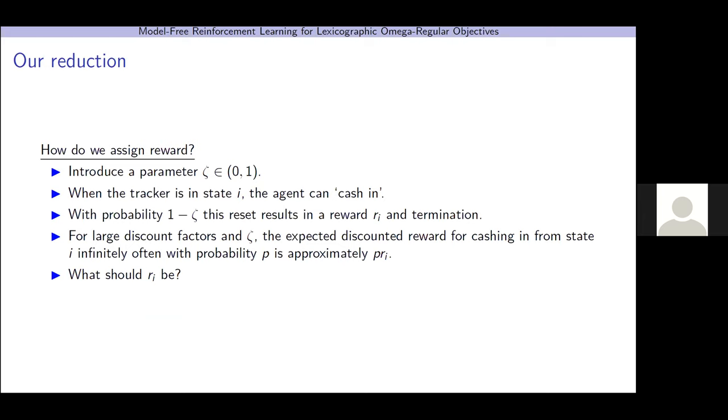So, how do we assign reward? We're going to introduce a parameter as before, zeta, and when the tracker is in state i, the agent can cash in. With probability 1 minus zeta, this reset results in a reward r_i and termination. For large discount factors in zeta, the expected discounted reward from cashing in from state i infinitely often, with probability p, is approximately p times r_i. So, if we pick the right r_i, we'll be able to get the result that we want.